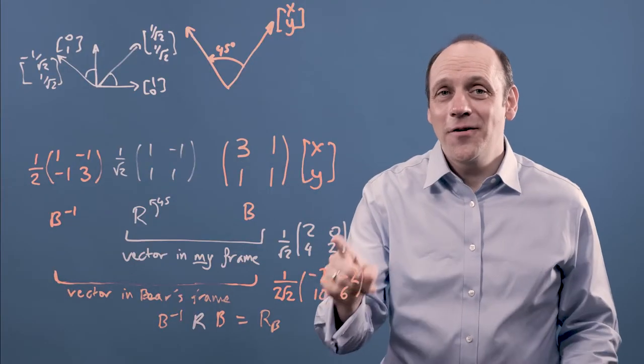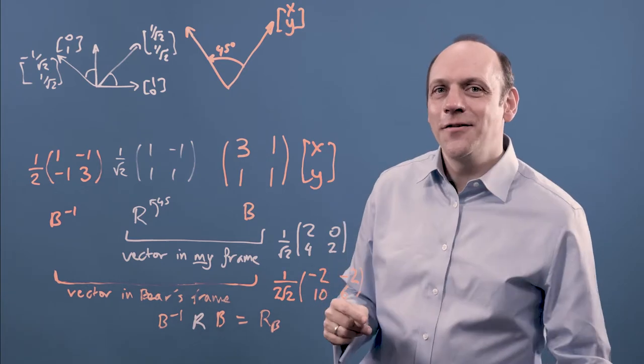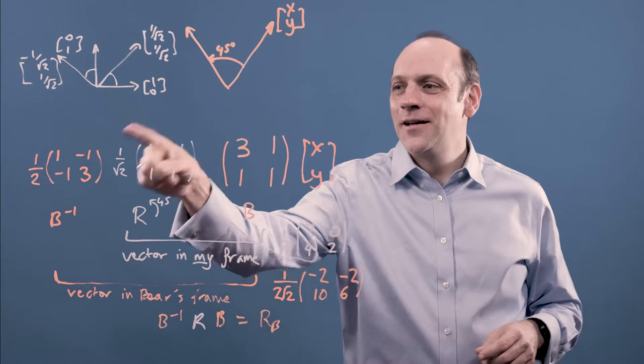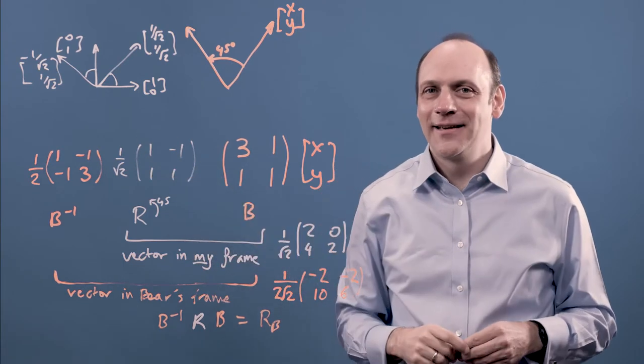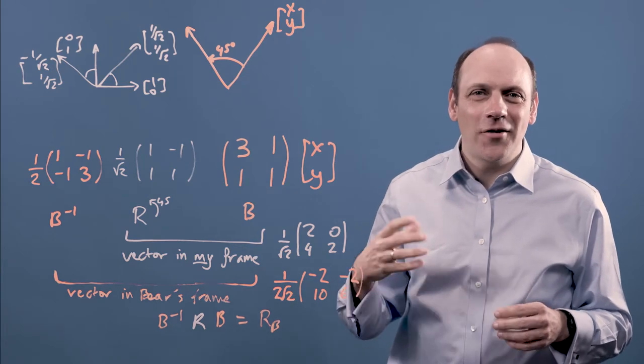So this is what a 45-degree rotation looks like in Bear's coordinate system. Notice that it's completely different to the one in my standard basis. It isn't very easy necessarily or obvious to enter it just out of your head.